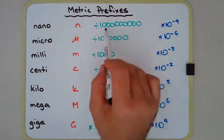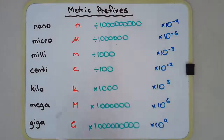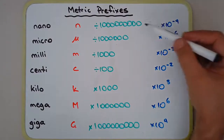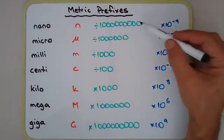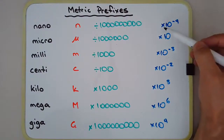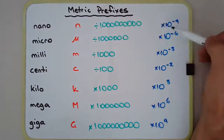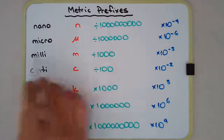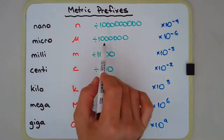What nano means is divide by a billion. So one nanometer is one divided by a billion, or a billionth of a meter. In blue I've written what it means, and in green is the number using scientific notation. Dividing by a billion is the same as multiplying by 10 to the power of negative 9.